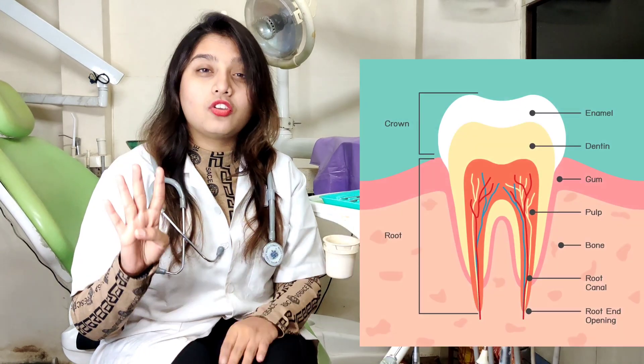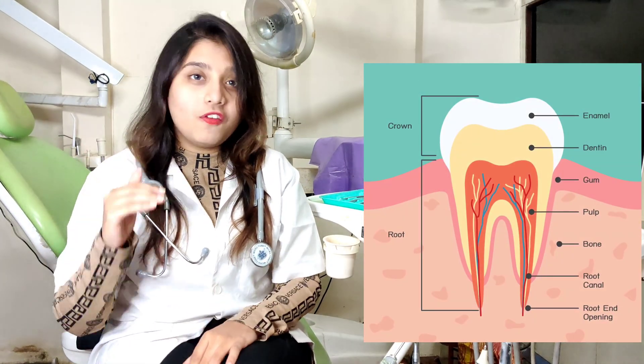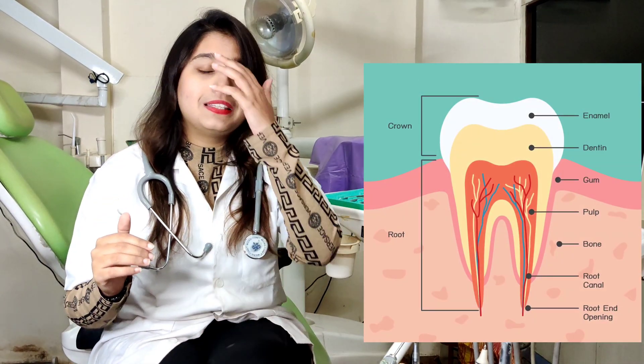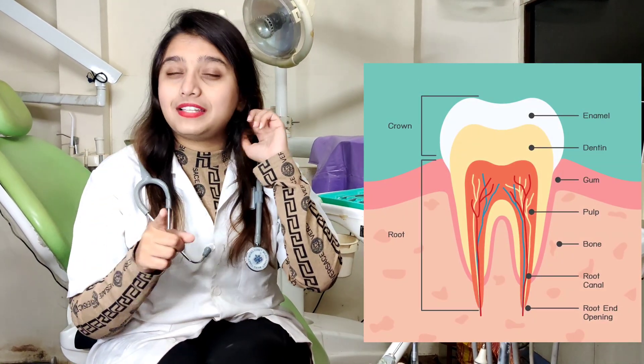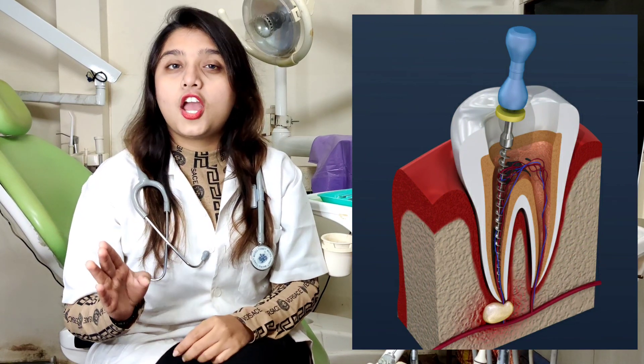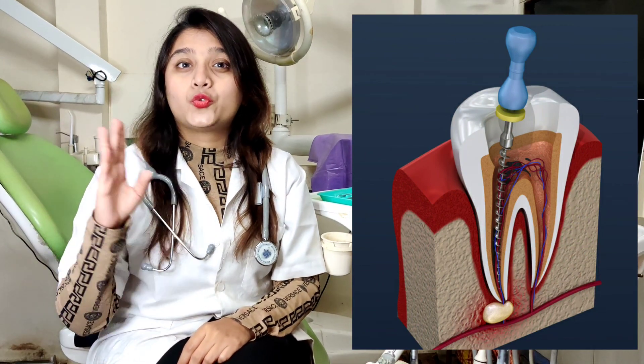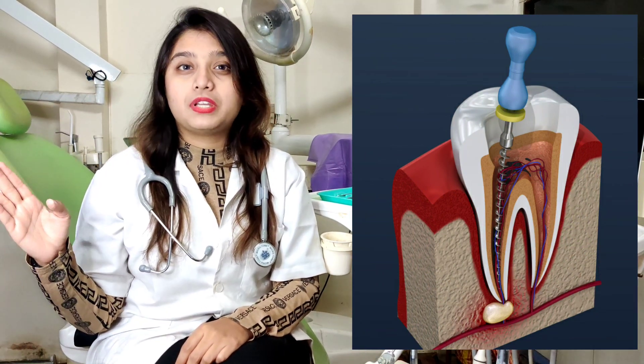If your stage of decay is under the fourth or fifth stage involving the pulp, then you might need a root canal. I will be talking about root canal treatment in further videos.